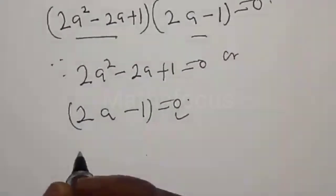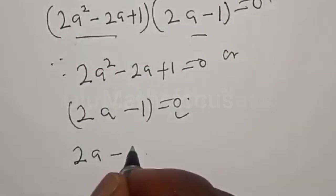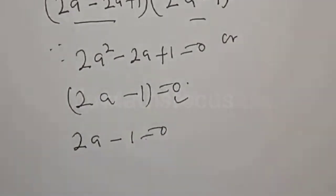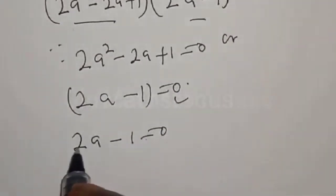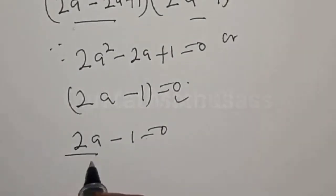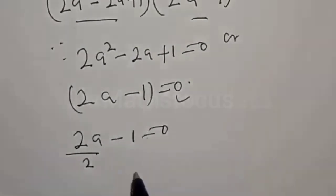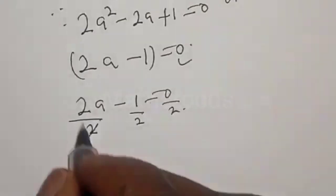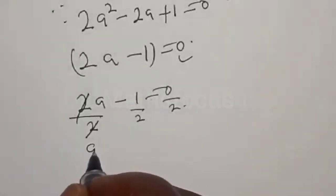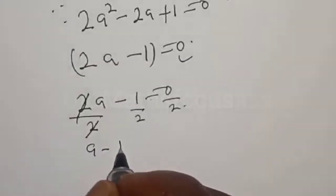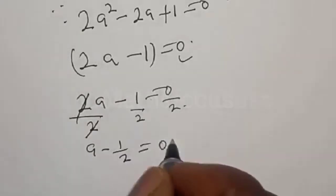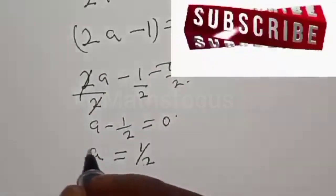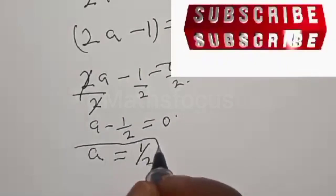From the second case, 2A minus 1 equal to 0. Let's divide both sides by 2. We are left with A minus 1 over 2 equal to 0. Therefore, A is equal to 1 over 2. That is one of the roots.